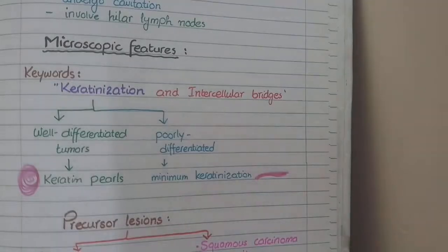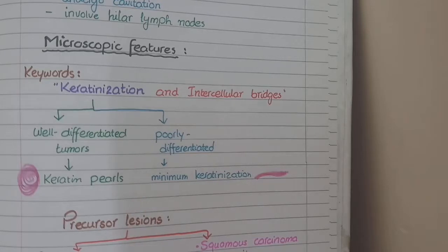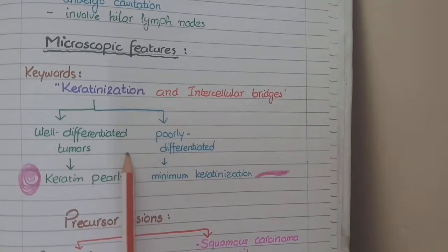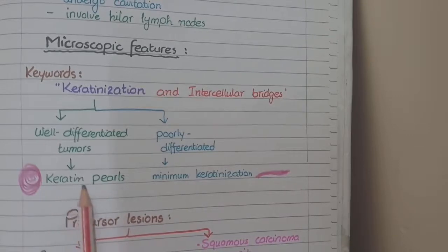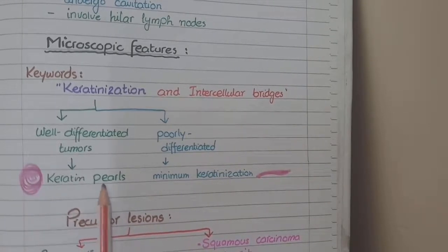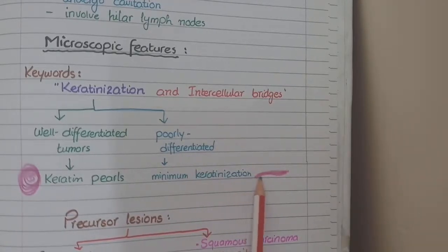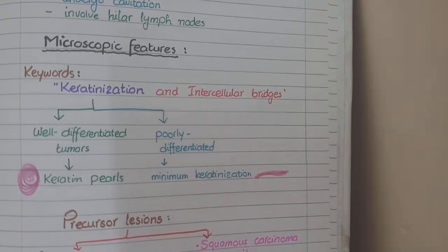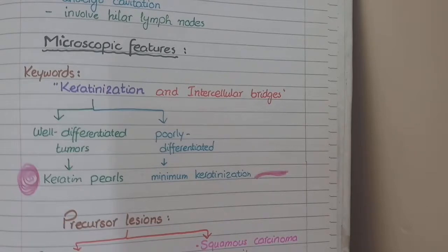For microscopic features of squamous cell carcinoma, focus on two keywords: keratinization and intercellular bridges. If the tumor is well differentiated, keratinization is organized into eosinophilic pink-colored pearl-like structures called keratin pearls. If the tumor is poorly differentiated, there will be minimal keratinization without formation of keratin pearls. You will also see intercellular bridges between tumor cells that are closely present together.